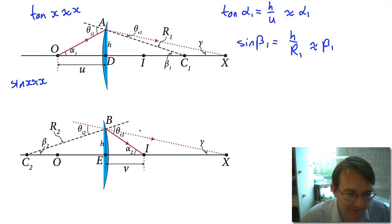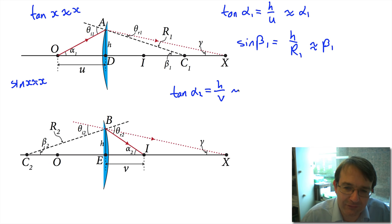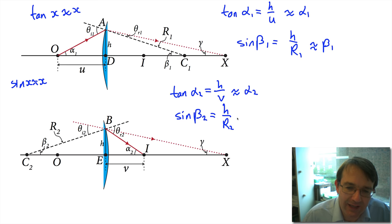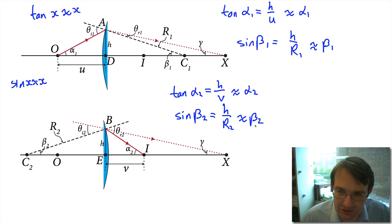For the back surface diagram: the tangent of α2 equals h divided by v, so α2 ≈ h/v. Similarly, the sine of β2 equals h divided by R2, the radius of curvature of the back face, so β2 ≈ h/R2. We now have approximate small-angle expressions for all four angles α1, α2, β1, and β2.